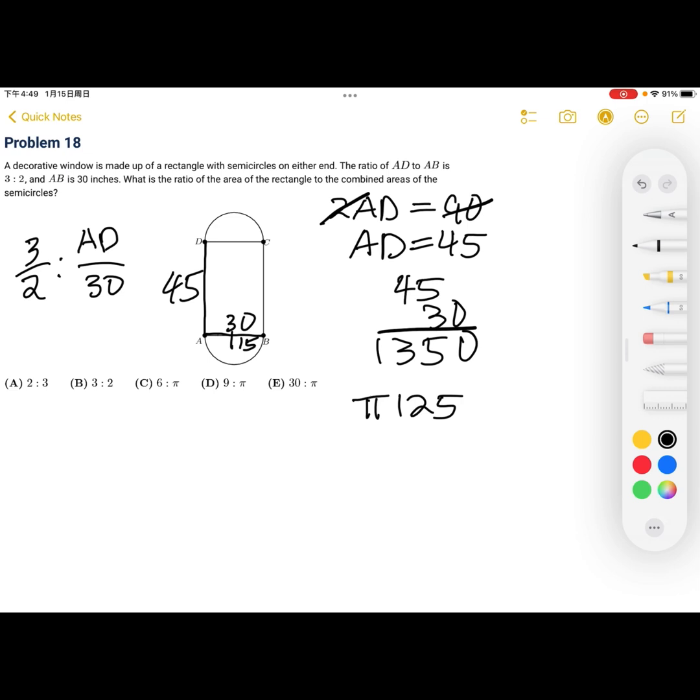which is just 1350 to pi over 125, pi to 125. Dividing 125 from both sides, we get that the final ratio is 6 to pi. So, our answer is C.